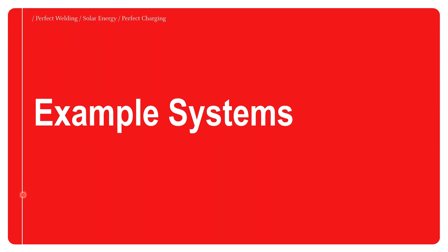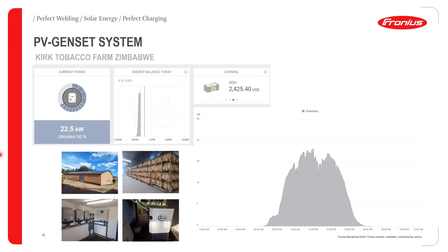Moving to example systems particularly relevant for the African market, where PV genset systems and AC coupled systems are widely used. First, looking at the PV genset system: the Kirk Tobacco Farm in Zimbabwe uses Fronius PV inverters tied to a genset. When the grid is available, PV reduces grid power draw; when the grid goes down, the genset starts and PV reduces diesel consumption.